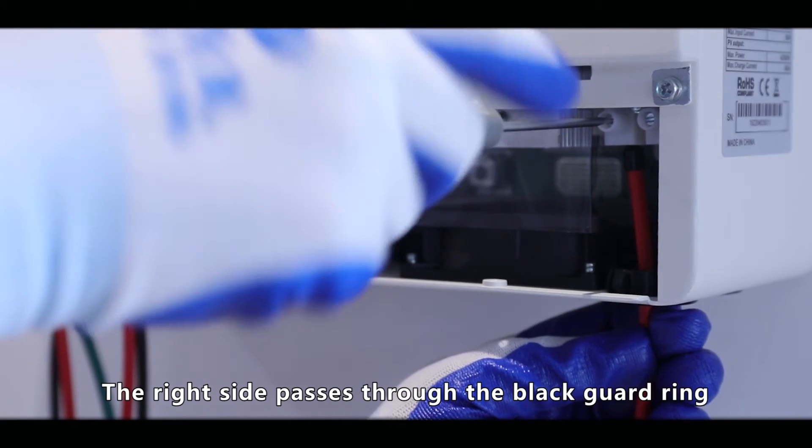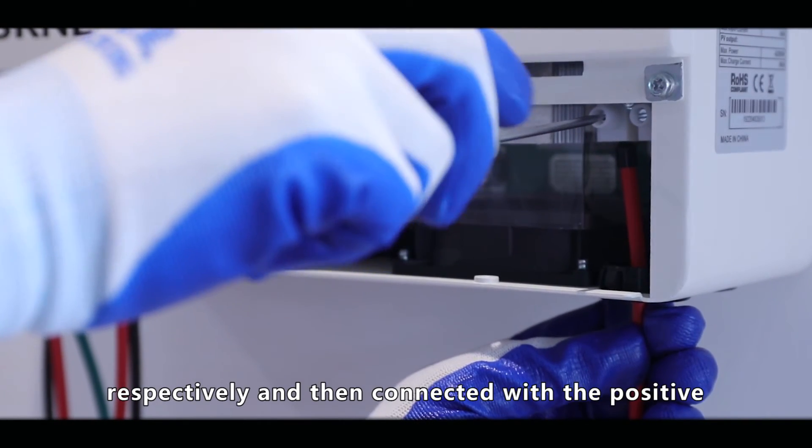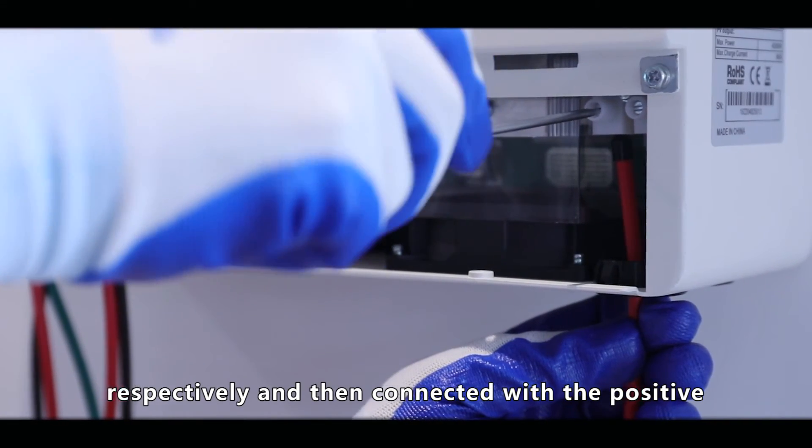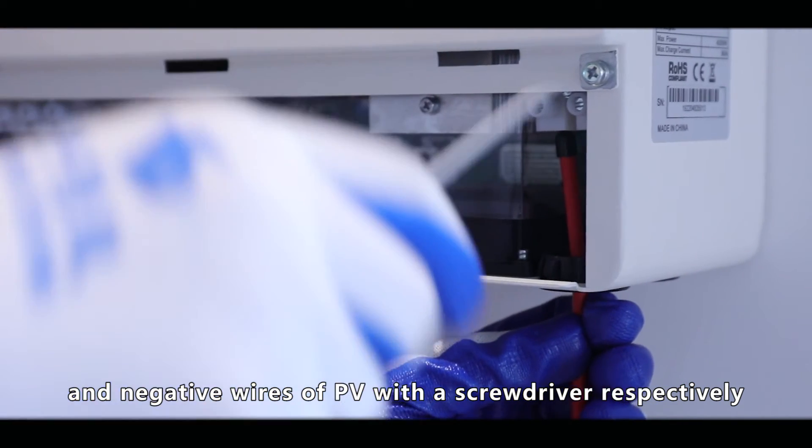The wires pass through the black guard ring respectively and then connect with the positive and negative wires of PV with the screwdriver respectively.